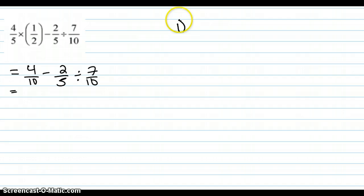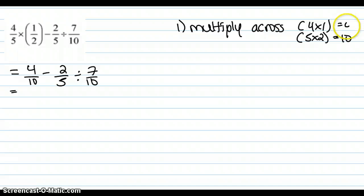So our first step would be multiply across. So it's multiplying the 4 and the 1 and the 5 and the 2. So we've got 10 and 4.